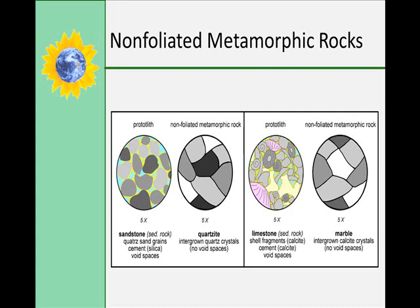Non-foliated metamorphic rocks include quartzite, which is metamorphosed sandstone in which the quartz grains have recrystallized into a very solid interlocking network. Marble is another type of non-foliated metamorphic rock, which is metamorphosed limestone composed of recrystallized and interlocking calcite and dolomite crystals.